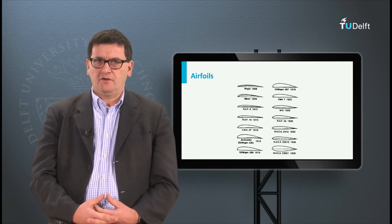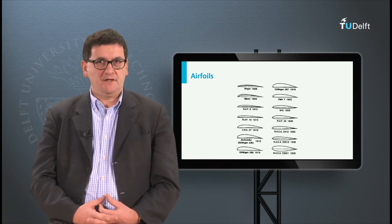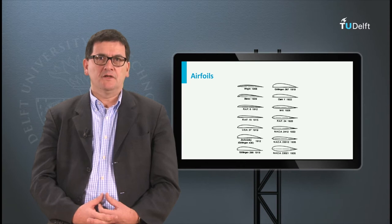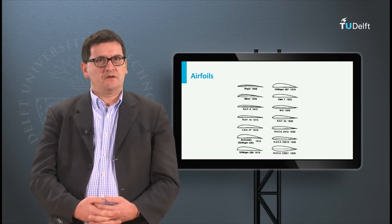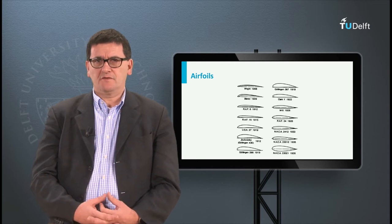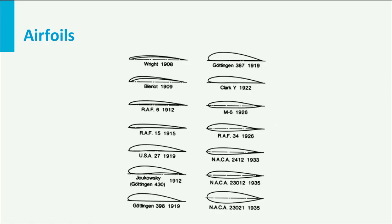Because of the importance of the airfoil, a lot of experimentation has been done in the early ages of aviation, searching for the ultimate airfoil. This resulted in a wide variety of airfoils as can be seen on this slide. What is remarkable is the fact that many airfoils have their own code. Later in the 1920s a more systematic nomenclature was introduced, which is still used today: the NACA profiles.